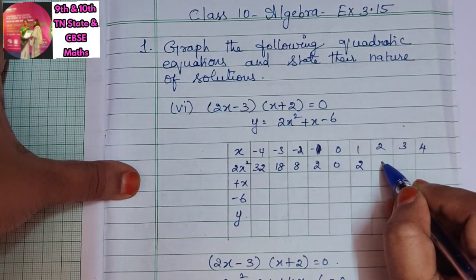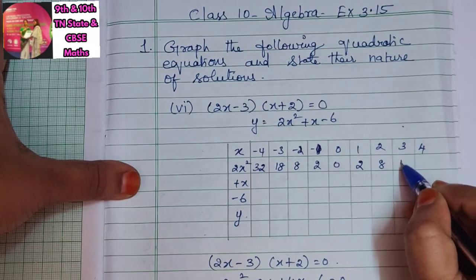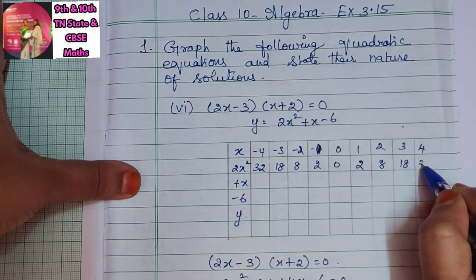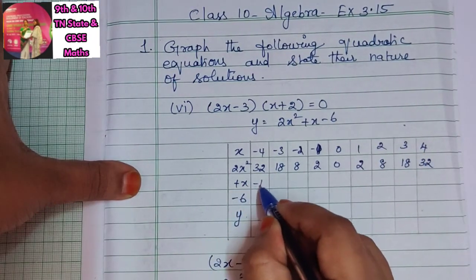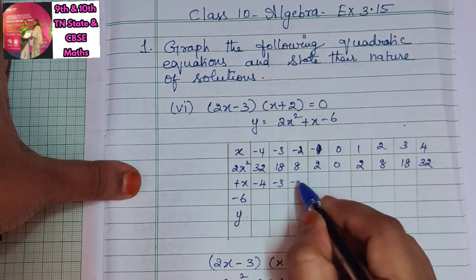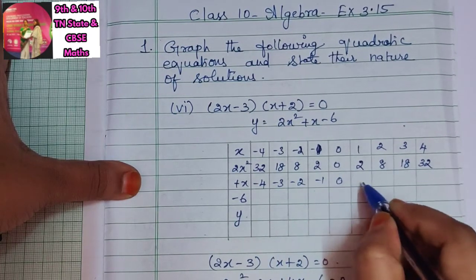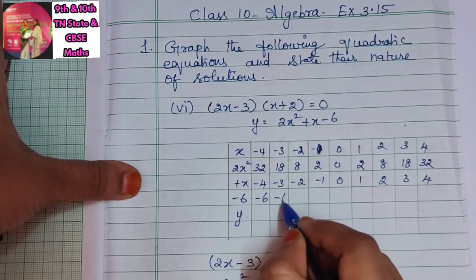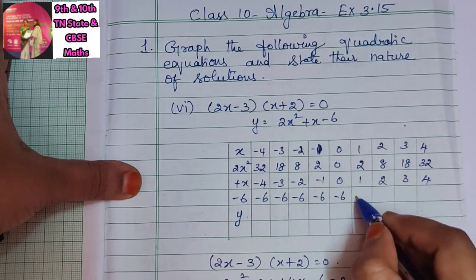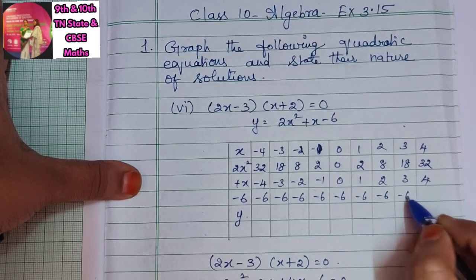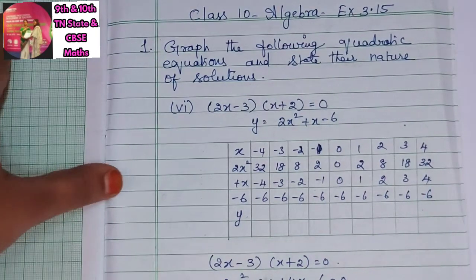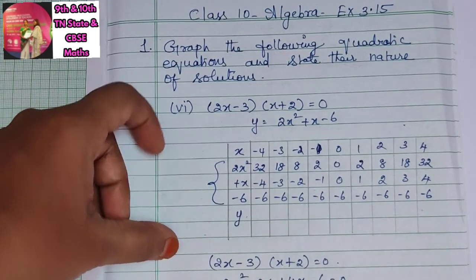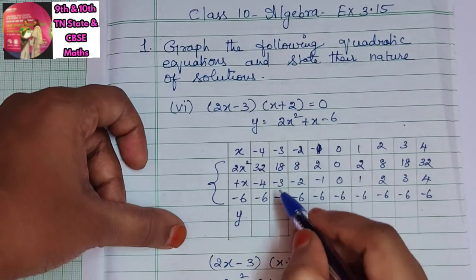For the 2x² column: when x = -4, x² = 16, so 2×16 = 32. When x = -3, x² = 9, so 2×9 = 18. When x = -2, x² = 4, so 2×4 = 8. Then 2, then 0. When x = 1, 2×1 = 2. When x = 2, 2×4 = 8. When x = 3, 2×9 = 18. When x = 4, 2×16 = 32.